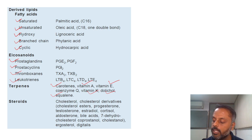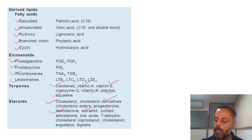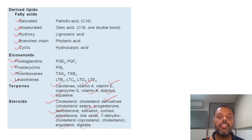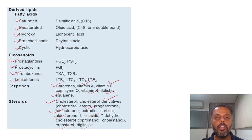Examples of steroids are cholesterol, cholesterol derivatives, testosterone, estradiol, bile acids, cortisone, ergosterol, and digitalis. That is all about definition, functions, and classification of lipid. Thank you.